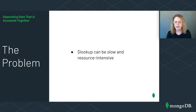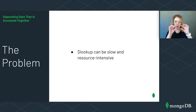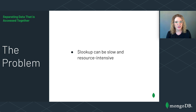The problem with separating data that is accessed together is that $lookup operations are slow and resource intensive compared to operations that don't need to combine data from more than one collection. When data that is accessed together is stored together, you can simply retrieve a single document to get the information you need. Think about the speed of retrieving a single row from a table versus retrieving a row combined from several different tables, especially if those tables are very large. Getting data from a single row is much faster, and the same principle applies here.